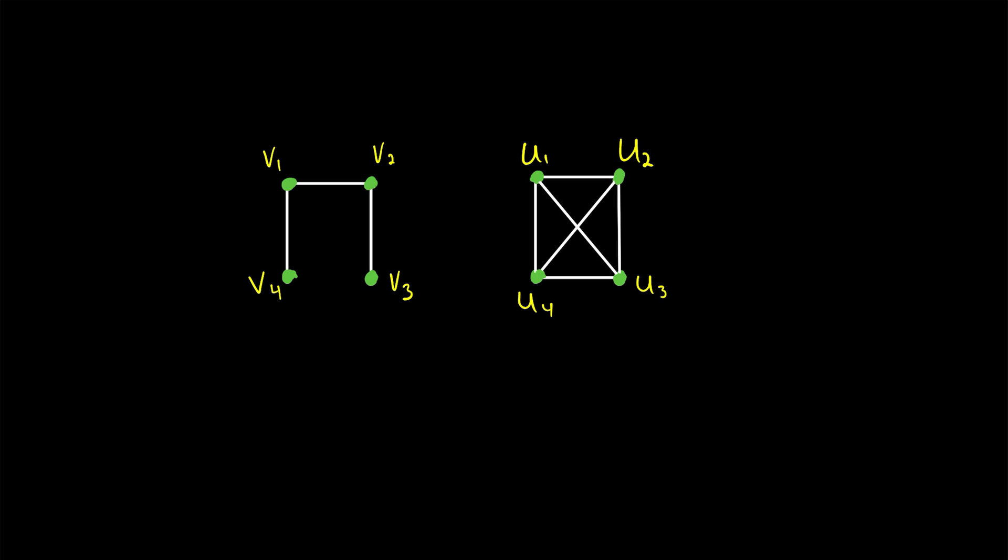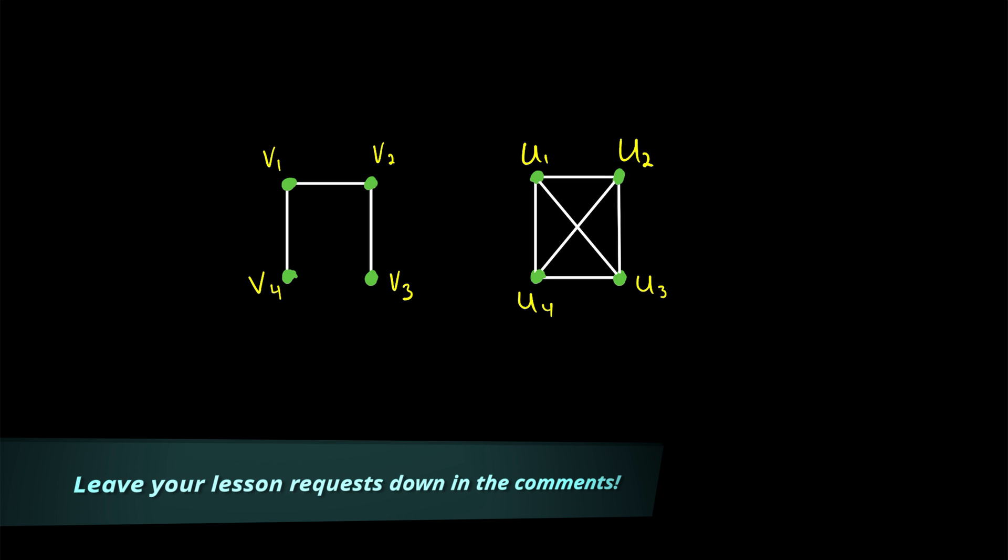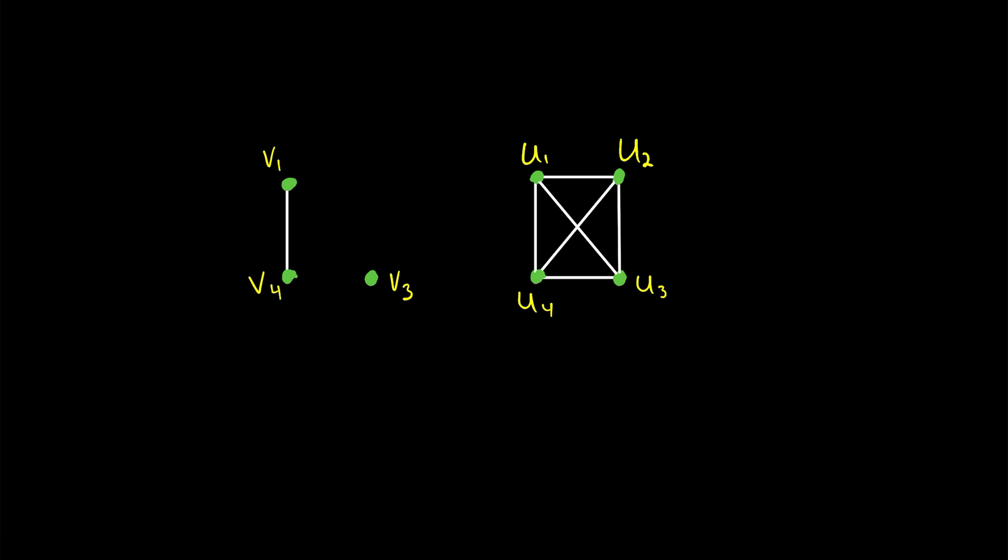We've talked about cut vertices before in graph theory. A cut vertex of a graph is a vertex that, when deleted, disconnects the graph or the component it belongs to. In today's Wrath of Math lesson, we'll be talking about a sort of generalization of cut vertices called vertex cuts or separating sets.